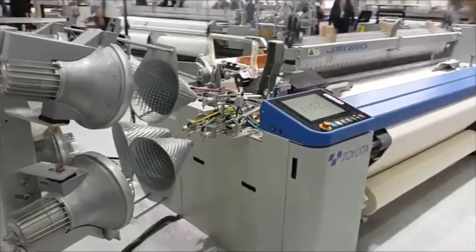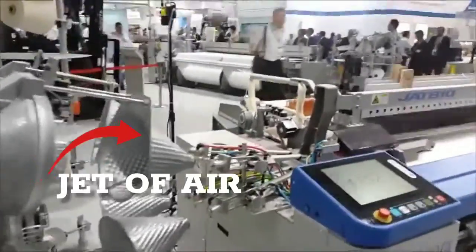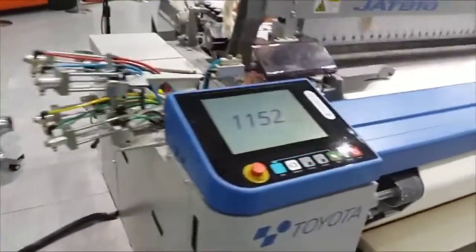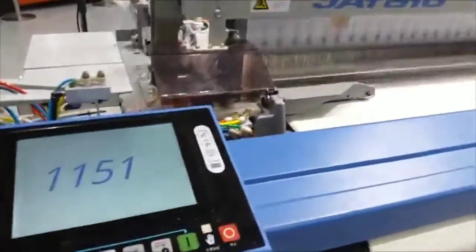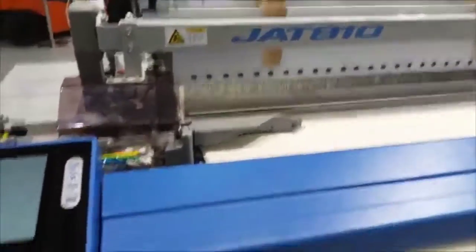An Air Jet Loom is a weaving machine that uses a jet of air to move the weft yarn through the warp yarns to create a fabric. It is a modern, high-speed loom that is widely used in the textile industry to produce a variety of fabrics, including woven fabrics.